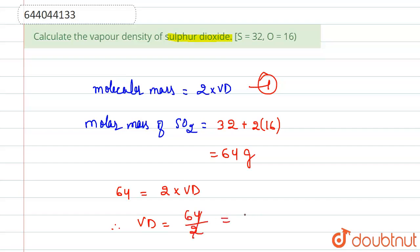This will be equals to 32. So the value of vapor density of sulfur dioxide is equals to 32.